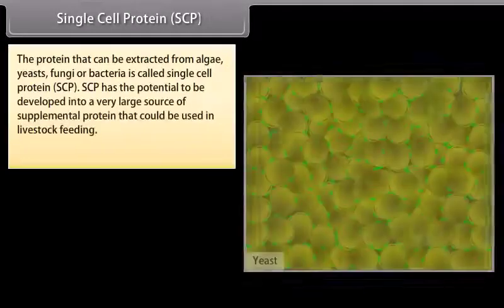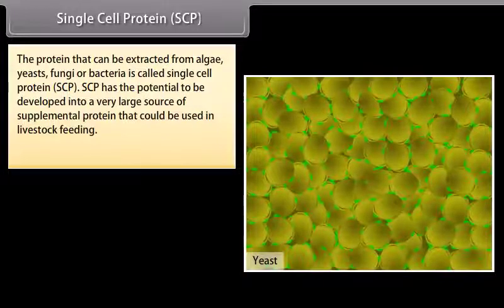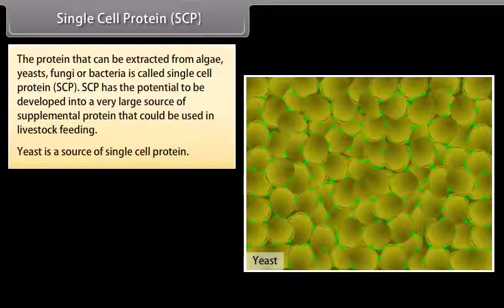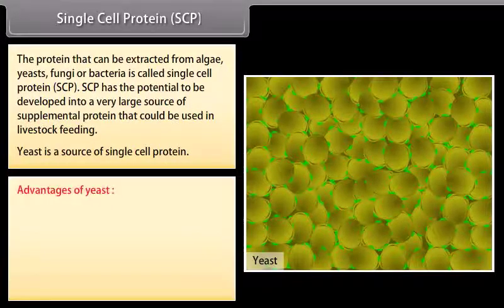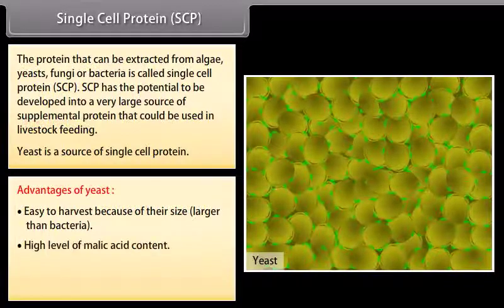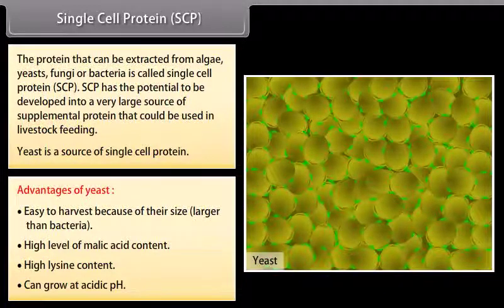Single cell protein (SCP): The protein that can be extracted from algae, yeasts, fungi, or bacteria is called single cell protein (SCP). SCP has the potential to be developed into a very large source of supplemental protein that could be used in livestock feeding. Yeast is a source of single cell protein. Advantages of yeast include: easy to harvest due to larger size than bacteria, high level of malic acid content, high lysine content, and ability to grow at acidic pH.